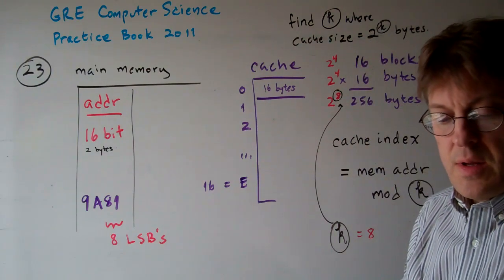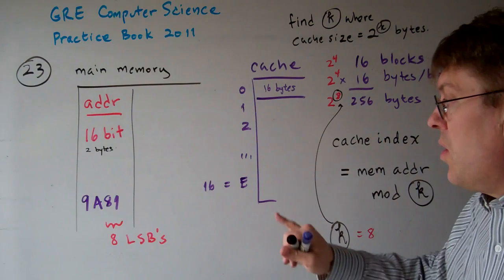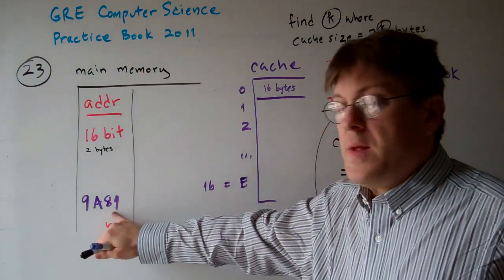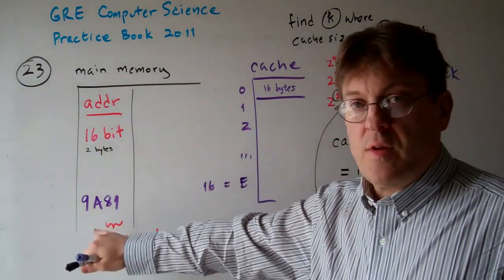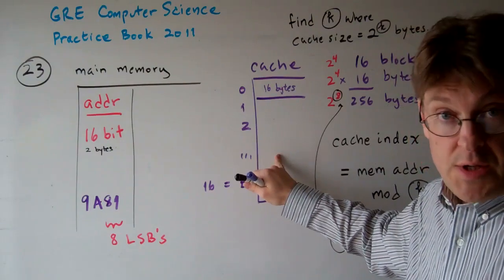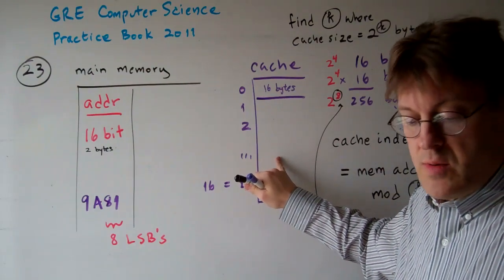Now, in a direct mapped cache, the least significant bits of the main memory address map to the cache. That's the important thing to know about direct mapped cache.